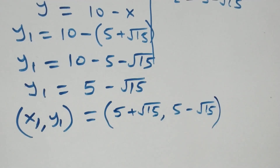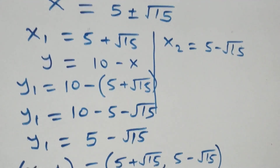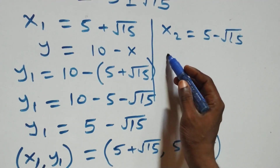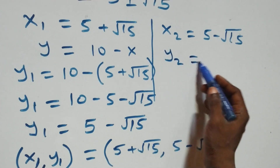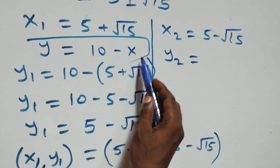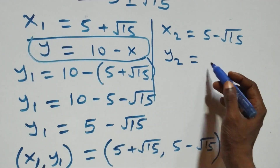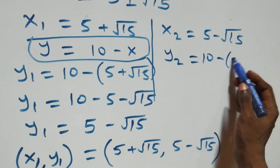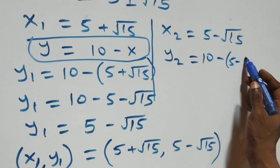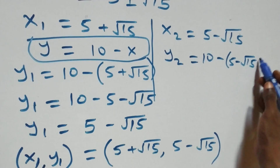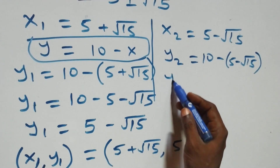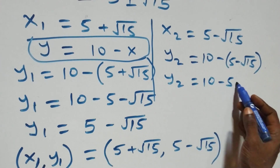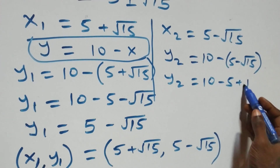We also get the corresponding value for x₂, finding y₂. Using the same relation, this becomes ten minus x₂, which is five minus root fifteen. So y₂ equals to ten minus five, then plus root fifteen, giving us y₂ equals to five plus root fifteen.